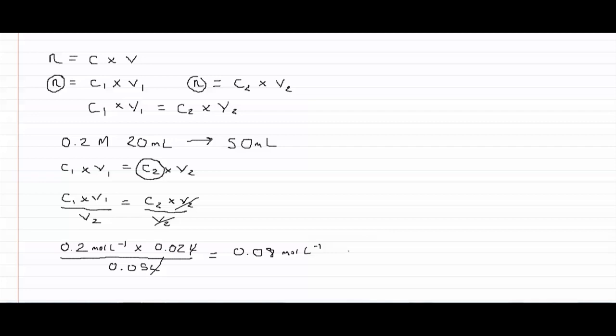So our new concentration after dilution is 0.08 moles per liter. So let's take another example and say we have a solution. So we have a 50 mil solution this time with a concentration of 2 molar. We want to dilute it to a new concentration of 0.5 molar.